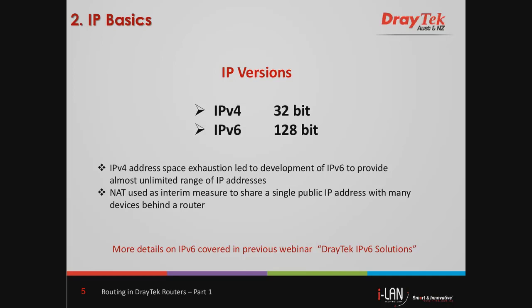An interim method is to use NAT, or Network Address Translation, in routers, where a single public IP address can be shared by a large number of devices located behind the router. To overcome this shortfall, IPv6 was developed to increase the number of available IP addresses. Since IPv6 uses 128 bits for its addresses, it allows an almost unlimited number of IP addresses. IPv6 was covered in detail in one of our previous webinars titled Draytech IPv6 Solutions, and we are planning to repeat this webinar in the coming months.